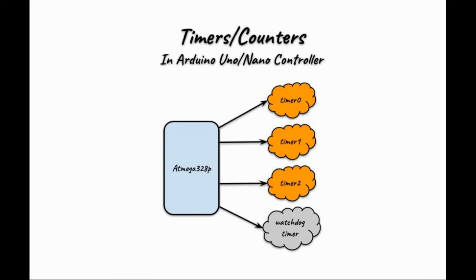A timer is basically a counter inside the Arduino microcontroller, which is used to measure time events. The timers or counters inside the Arduino Uno controller, namely the ATmega 328P, are Timer 0, Timer 1, Timer 2, and the watchdog timer.